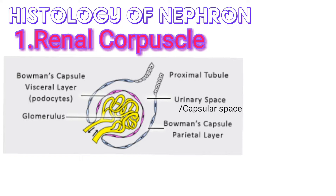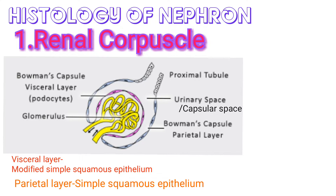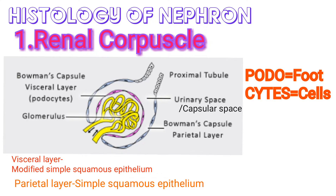The glomerular capsule consists of a visceral layer and a parietal layer. The visceral layer consists of modified simple squamous epithelial cells called podocytes. The word 'podo' means foot and 'cytes' means cells, so they form foot-like projections in the inner wall of the capsule. The outer layer, the parietal layer, is made up of simple squamous epithelial cells.